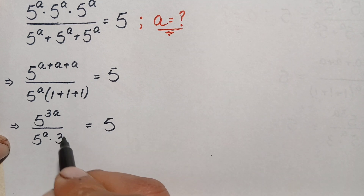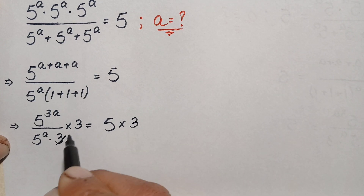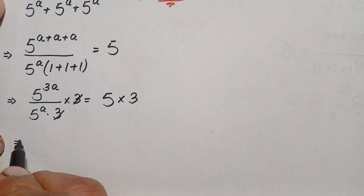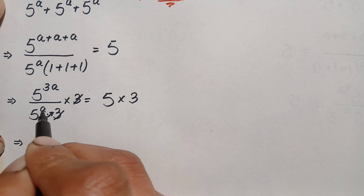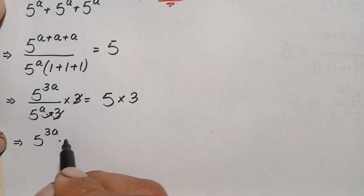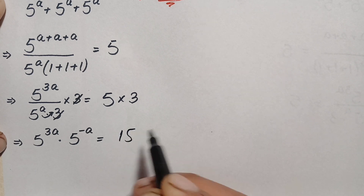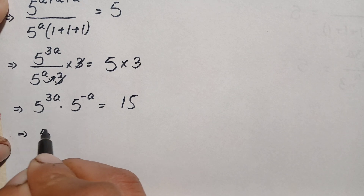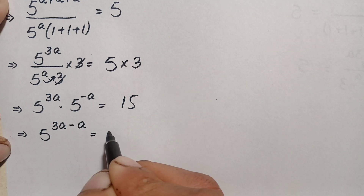Now we multiply both sides by 3 to eliminate the 3 from the denominator. The 3s cancel on the left hand side. Then we move 5 raised to power a to the numerator, so its power sign changes — it becomes 5 raised to power negative a. This gives 5 raised to power 3a times 5 raised to power negative a, equal to 5 times 3, which is 15. Since the bases are the same, we add the powers: 3a plus negative a gives 5 raised to power 2a equals 15.